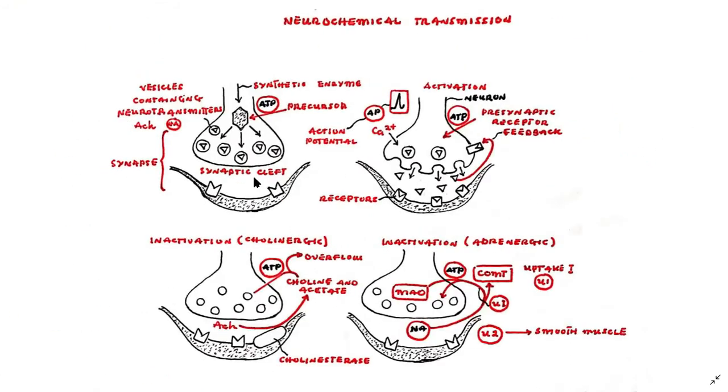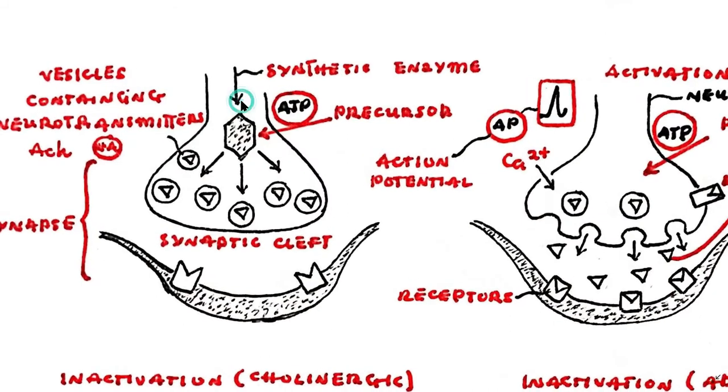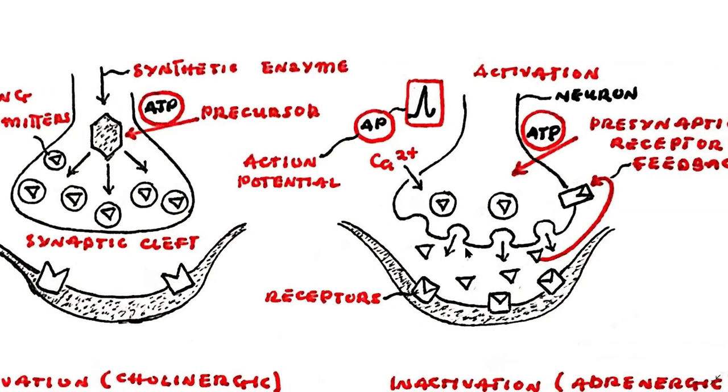Action potentials in incoming neurons are transmitted by the release of neurotransmitters that bind to receptors on the postganglionic neuron or effector tissue.